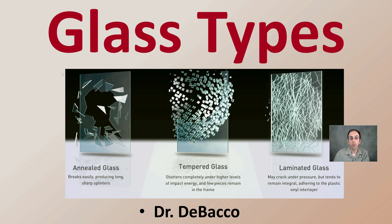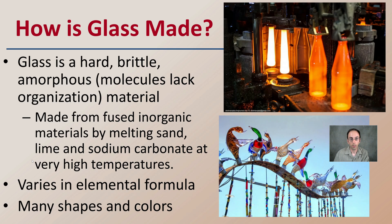Welcome back to another DeBacco University video. Here we're looking at different types of glass. We see three general categories provided here: annealed, tempered, and laminated, along with some properties listed below them. But we're going to go into even more detail here.